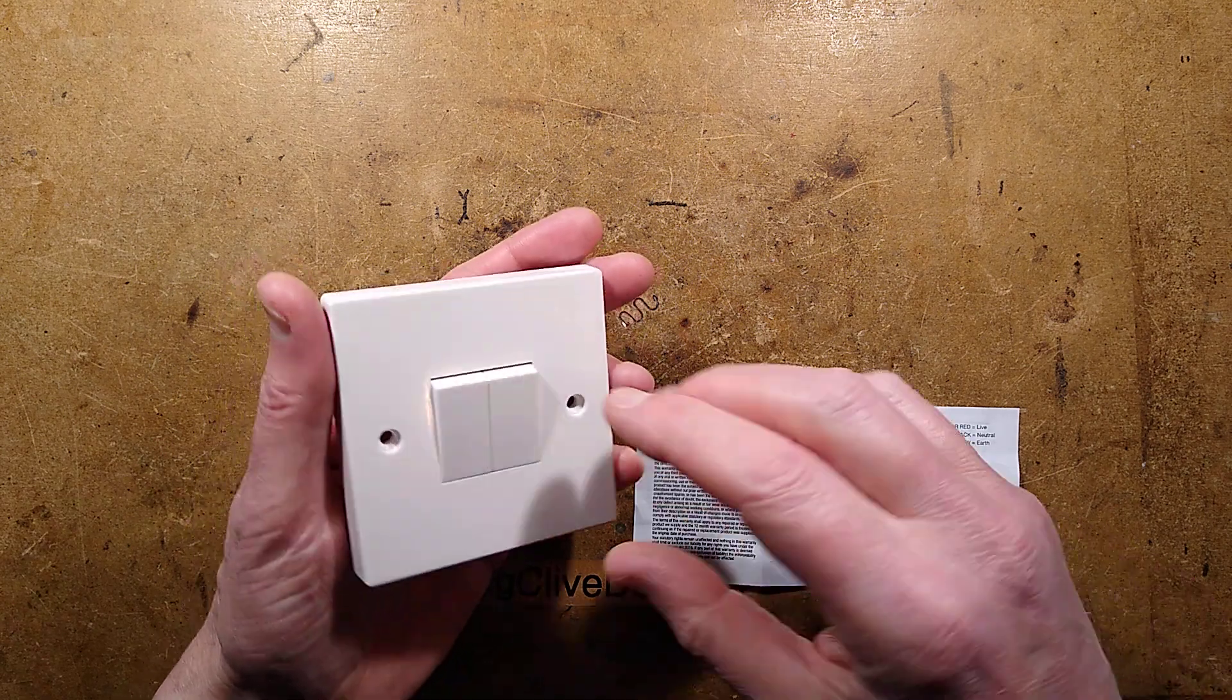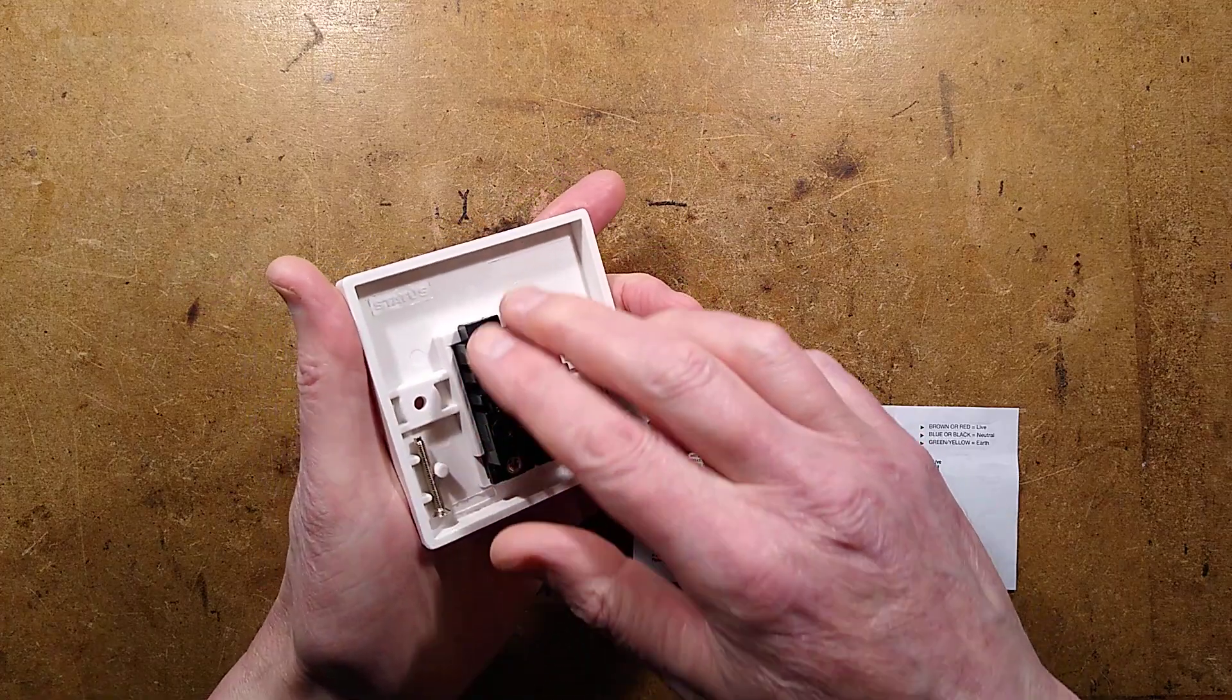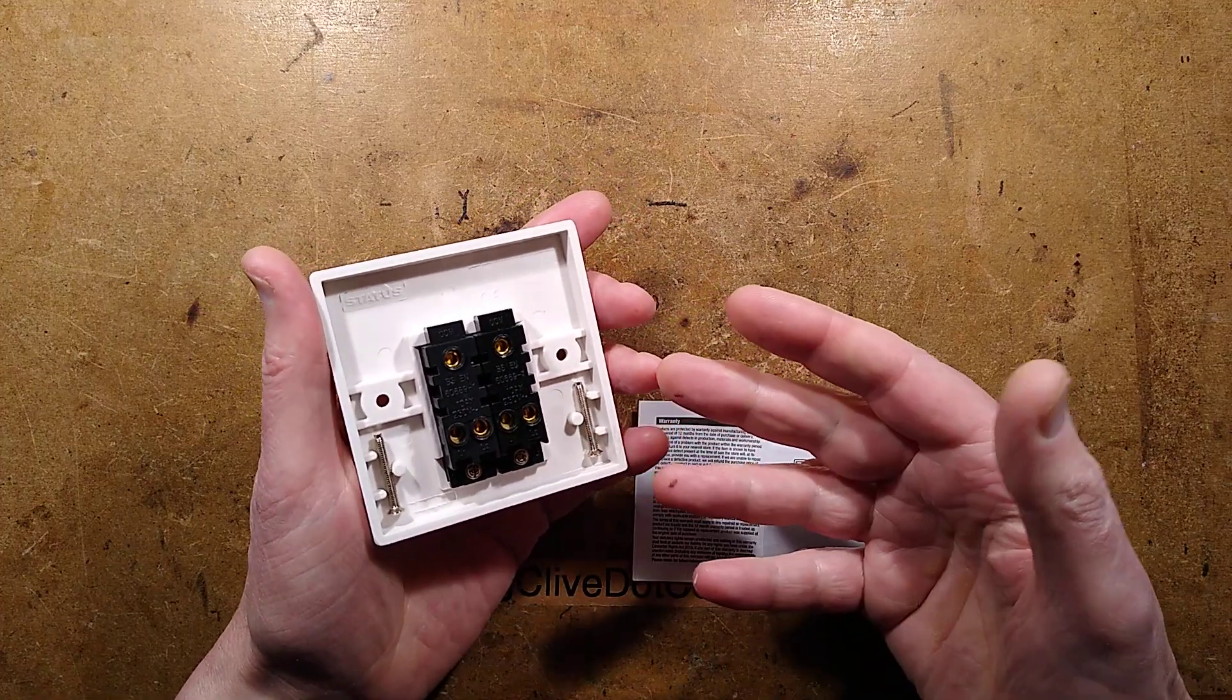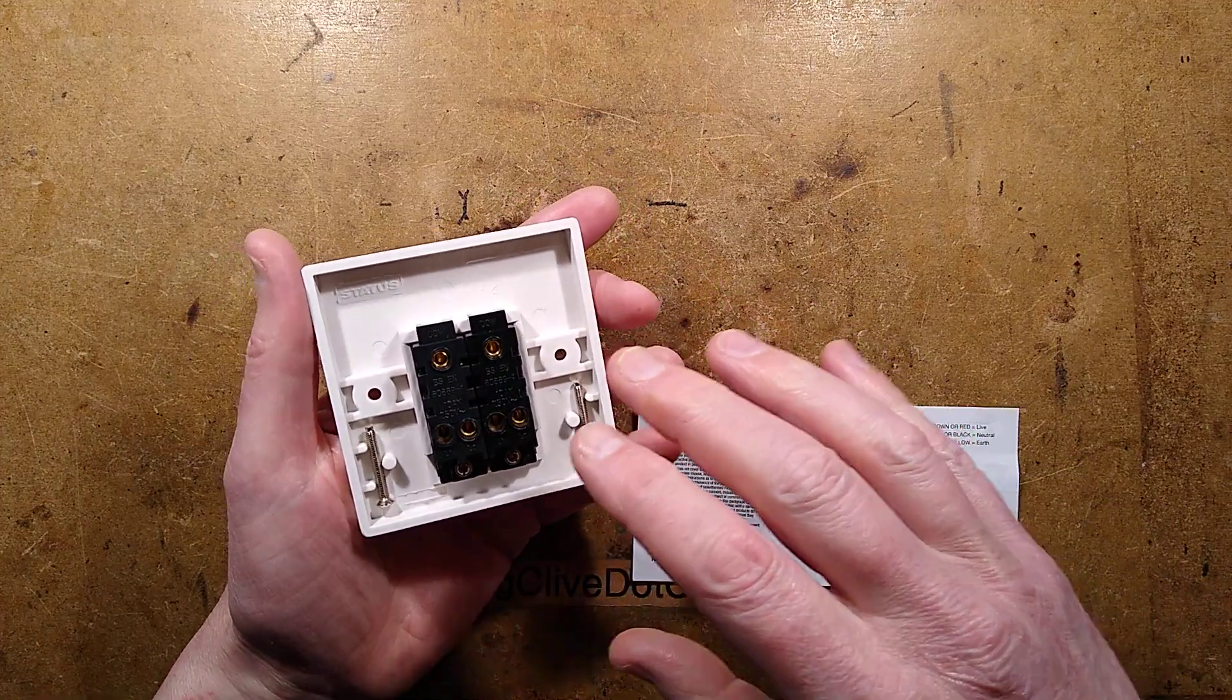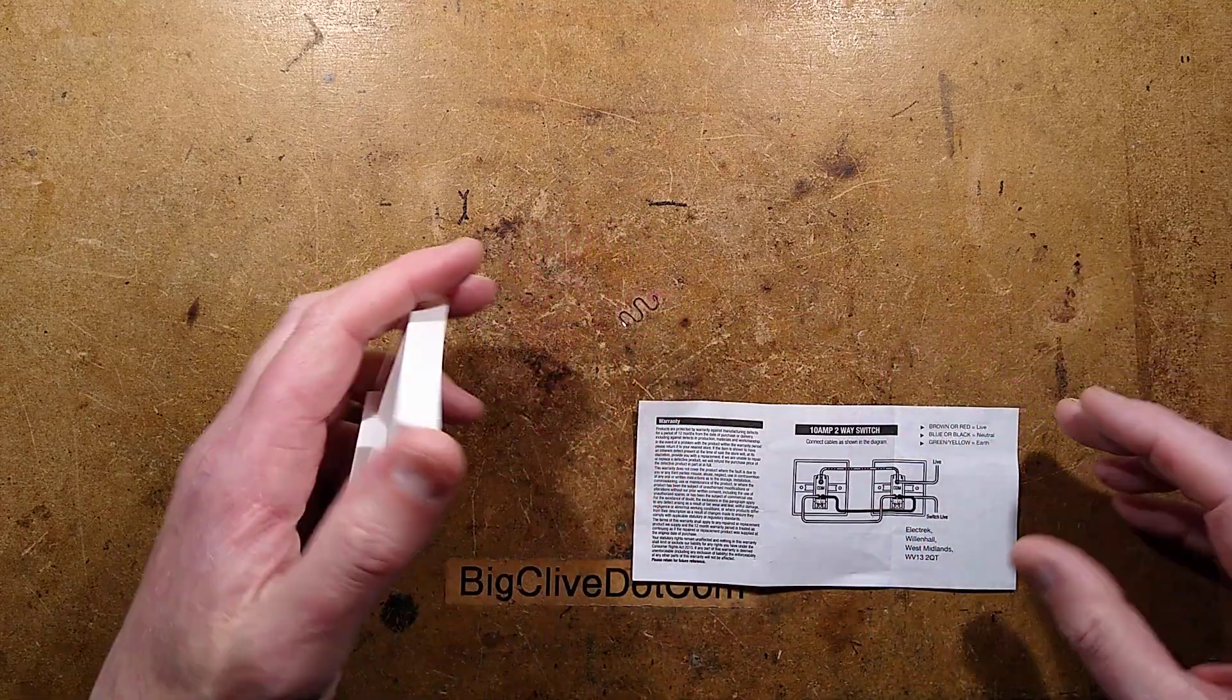I was in the local Poundland and I noticed they had loads of these double gang switches. They're two-way switches, or three-way I think they call them in America, but they were selling them off for 50 pence each. It's a prominent brand - Status, a recognized brand.